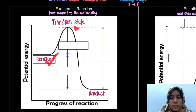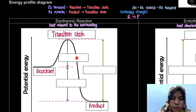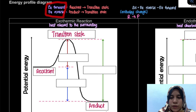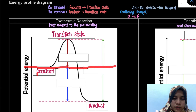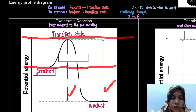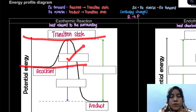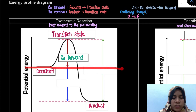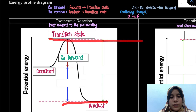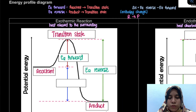So we have our reactant, our transition state, and our product. For Ea forward, it goes from the reactant to the transition state — that arrow represents Ea forward. For Ea reverse, it goes from the product to the transition state. And the last label is delta H, which is Ea reverse minus Ea forward.